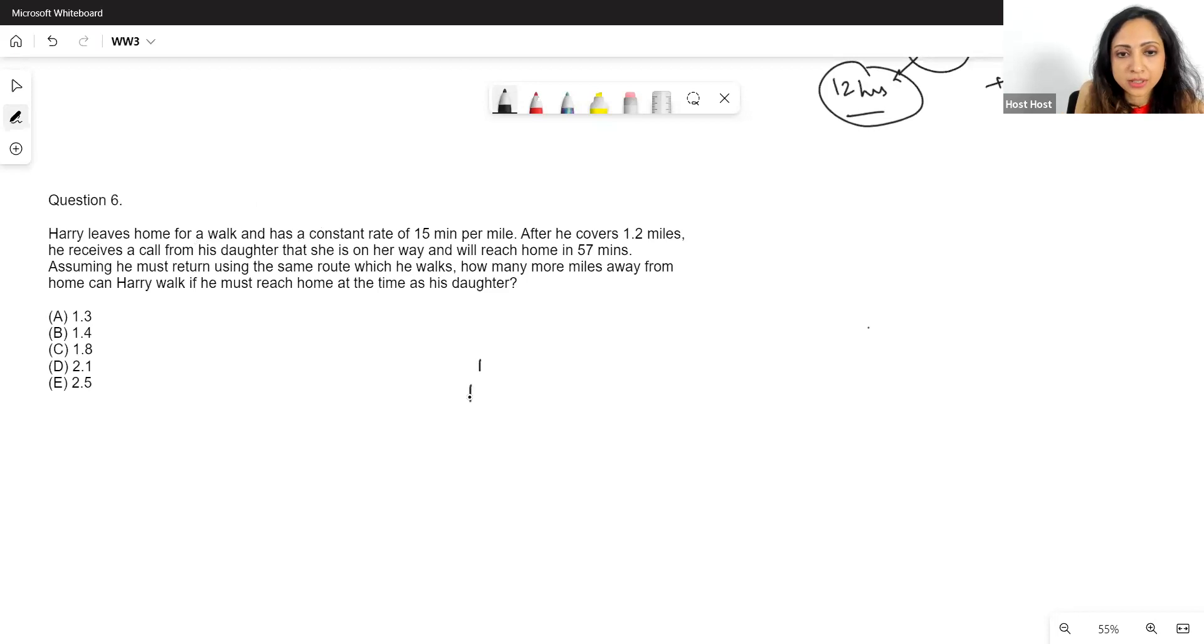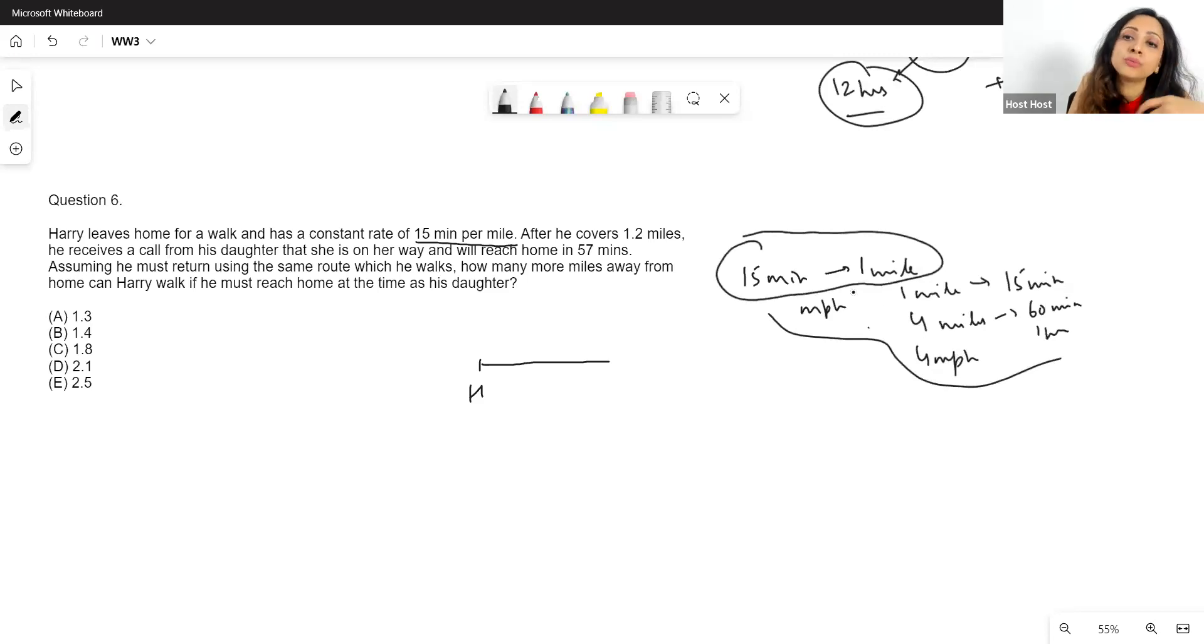Let's take a look at it. Harry leaves home for a walk. So he's here at home, and he leaves home for a walk, and has a constant rate of 15 minutes per mile. Now, speed is given to us in terms of time per distance, which means he takes 15 minutes for one mile. Now, if I want to convert it into our usual speed of miles per minute, for example, miles per hour, what will I do? I know that one mile is covered in 15 minutes. So then four miles will be covered in 60 minutes, which is nothing but one hour. So the speed becomes four MPH. Cool. But in any case, we don't need to do all this calculation. This is just something that, because the speed is given in a different format, how could we convert it into a regular format, we may not even need to. So we'll not do this calculation when we read the first line. Just that in case we do need to in some question, this is how we can do it.